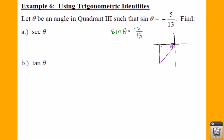Keep in mind what sine is equal to: this is a y value over our r, our radius. So that means we're going to put a 13 here for our r, this is going to be a negative five right here for our y. So we're going to have to find our third side.